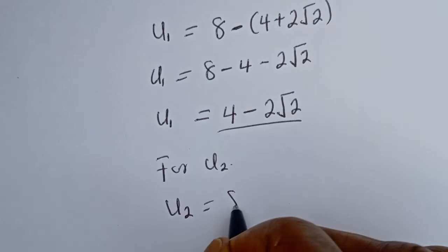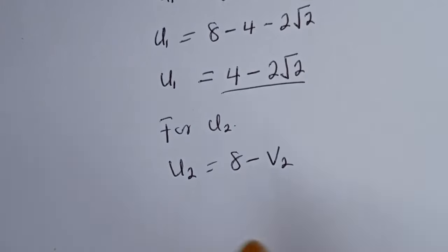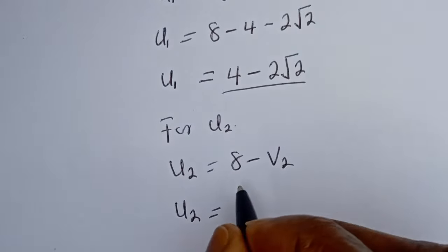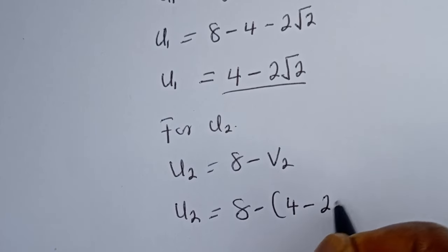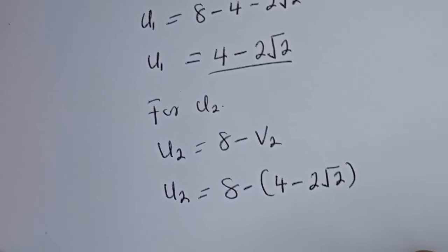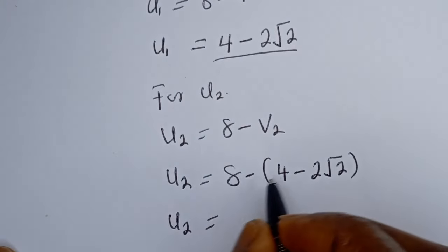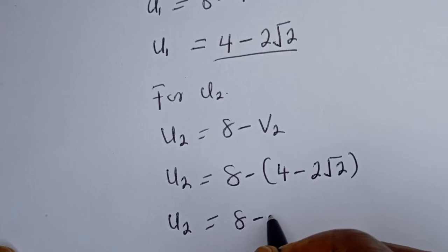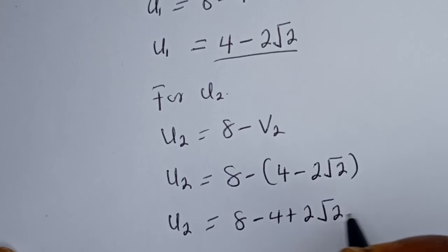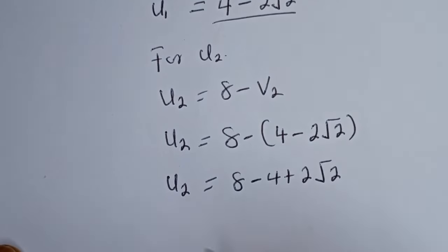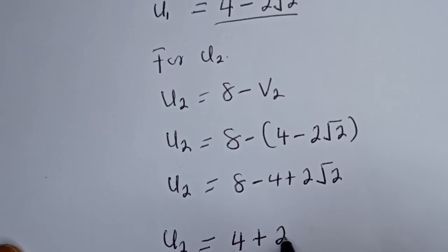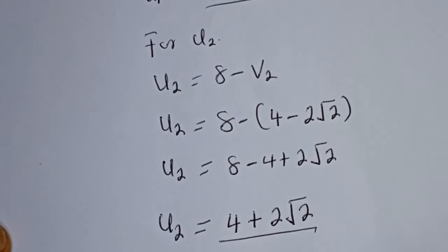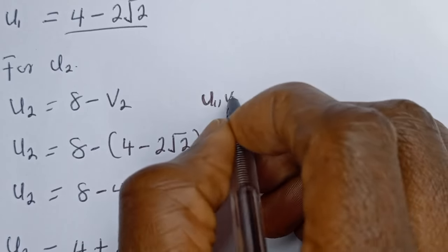For U2: U2 is equal to 8 minus V2, where V2 is 4 minus 2 root 2. So U2 equals 8 minus (4 minus 2 root 2), which gives 8 minus 4 plus 2 root 2, so U2 equals 4 plus 2 root 2.